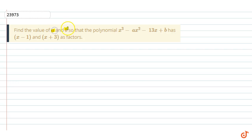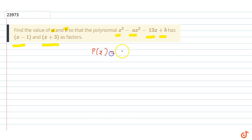Find the value of a and b so that x³ minus ax² minus 13x plus b has x minus 1 and x plus 3 as factors. So if we look at this question, we have a polynomial given: p(x) = x³ - ax² - 13x + b, and we are given that (x - 1) and (x + 3) are factors.